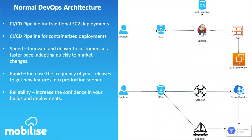Here are two lightweight pipeline architectures as a starting point. The top one is your CI/CD pipeline for traditional EC2 deployments — your monolithic web app built onto a single instance, made into an AMI (an image), which you then deploy into your infrastructure to serve content. The second pipeline is a containerized pipeline, which is becoming more commonplace with the popularity of Kubernetes — more suited to microservices.